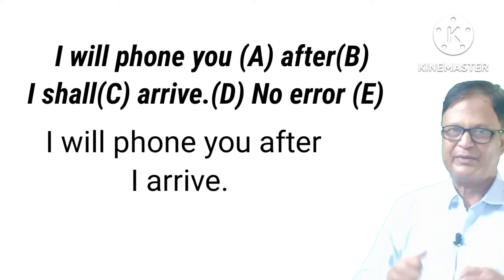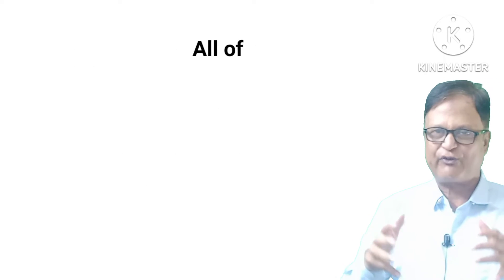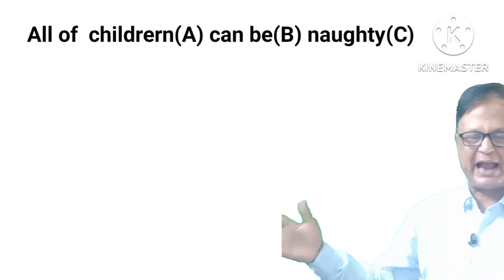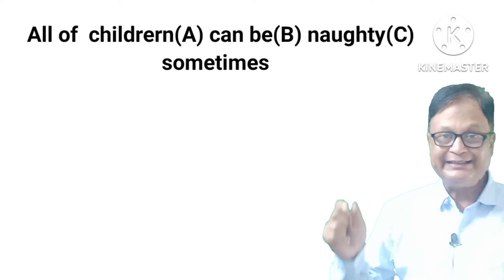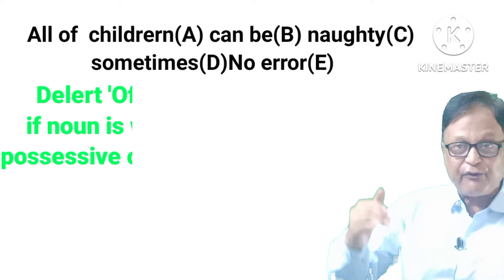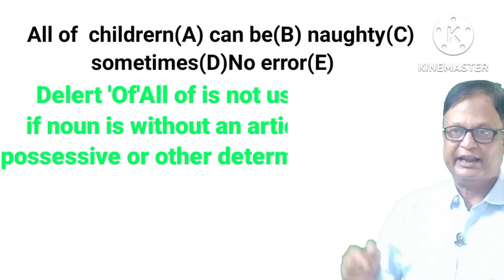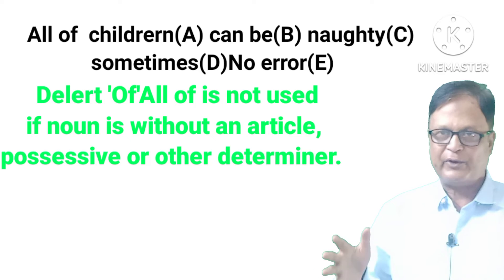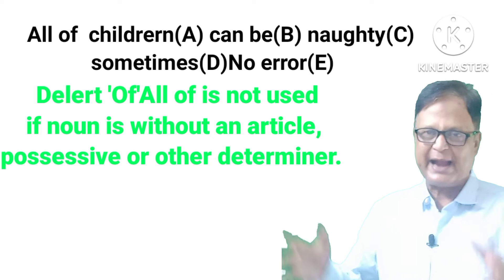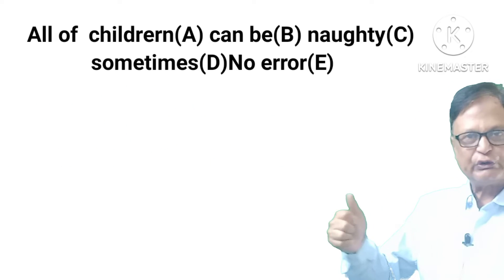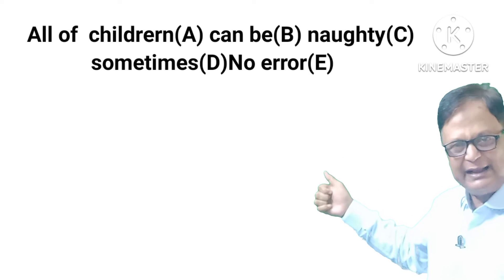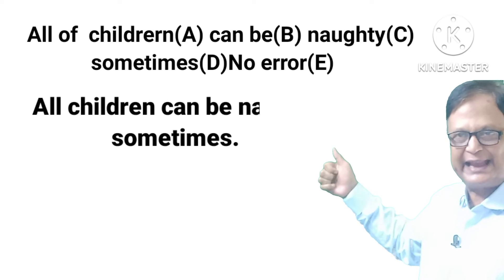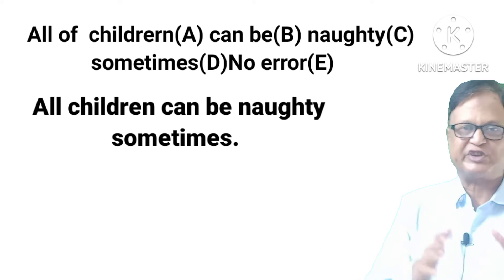Next: 'All of children can be naughty sometimes.' Delete 'of.' 'All of' is not used when the noun has no article, possessive, or other determiner. You should write: 'All children can be naughty sometimes.'